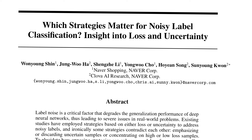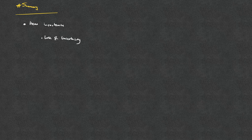In this video we'll go over the paper titled 'Which Strategies Matter for Noisy Label Classification: Insight into Loss and Uncertainty.' In short, this paper tries to investigate what characteristics make an example from a dataset important for the training pipeline. To this end, they focus on loss values and the uncertainty of model predictions in determining the importance of an example for training.